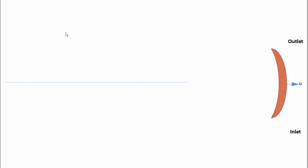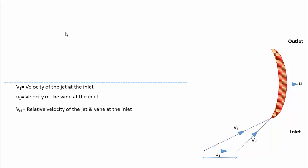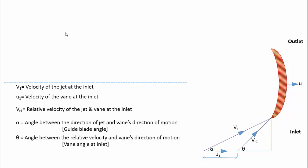At the inlet, the jet is impinging with a velocity V1. As the blade is moving simultaneously, let's take the velocity of the blade or vane at the inlet as U1. The relative velocity between the jet and the blade is taken as Vr1. The angle made between the jet velocity and the movement of the blade is taken as alpha. Likewise, the angle made between the relative velocity and the movement of the blade is taken as theta.